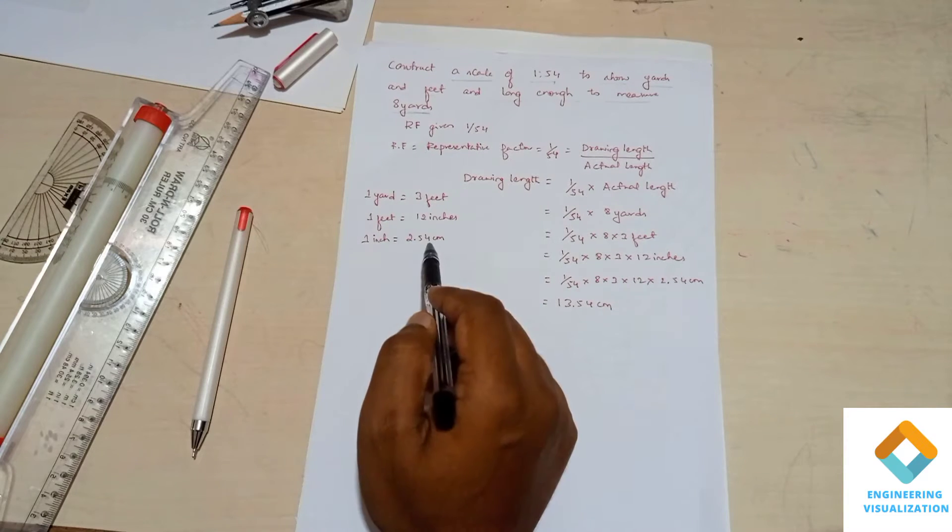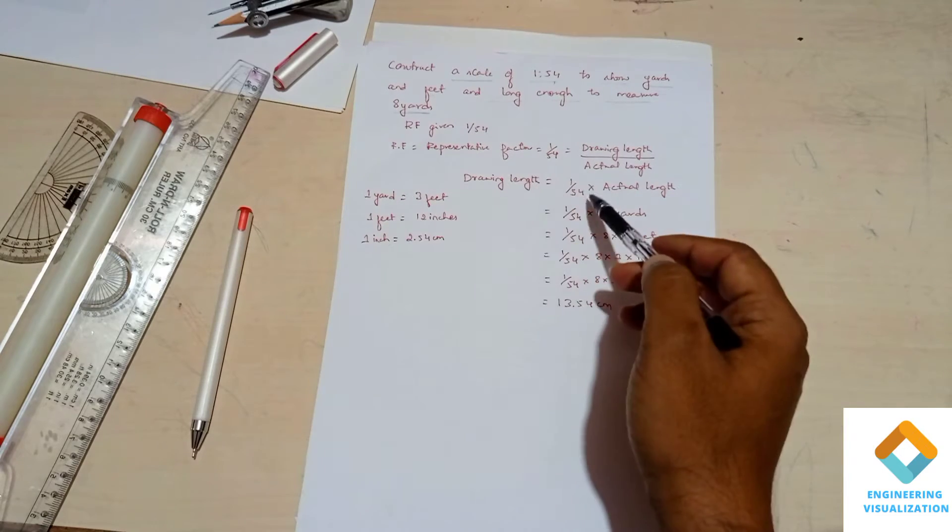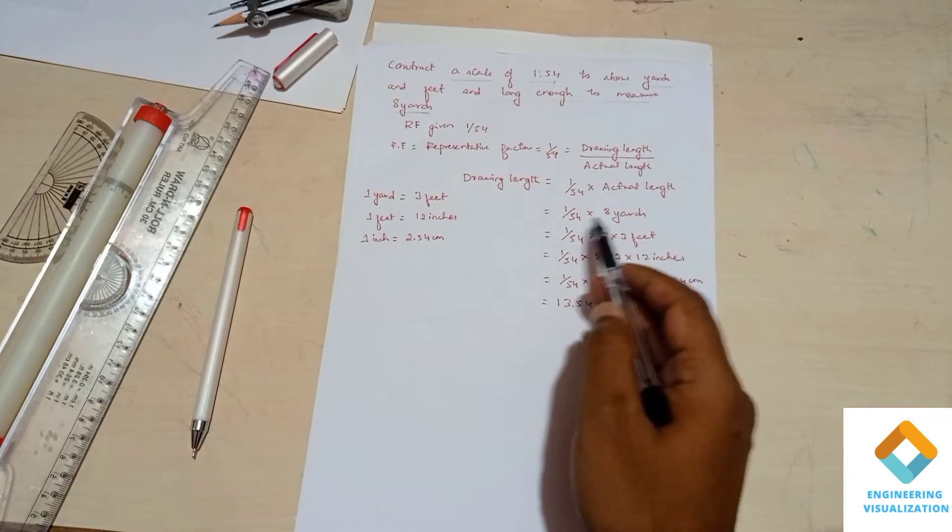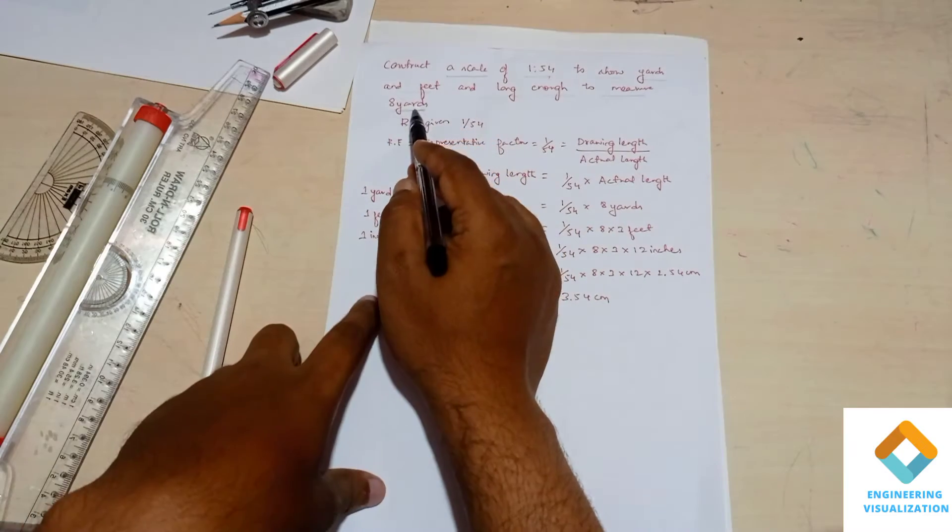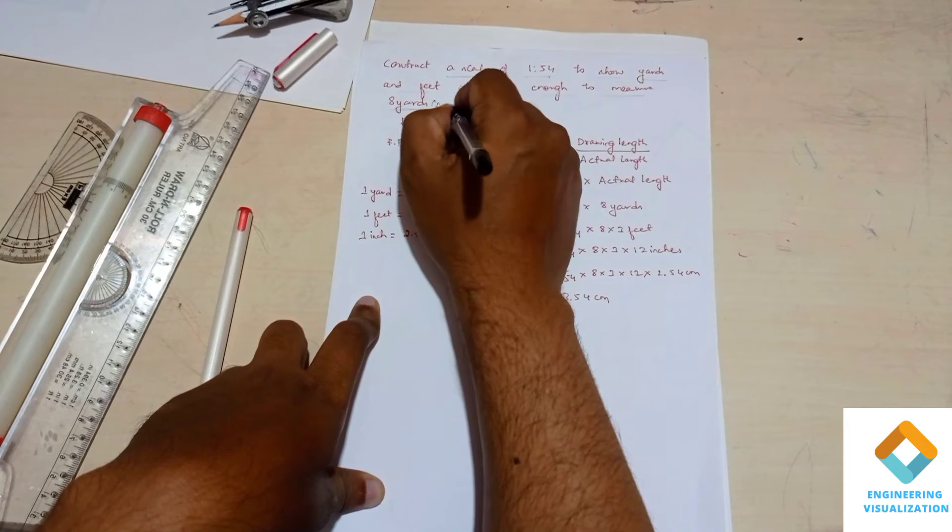You can see that 1 yard is equal to 3 feet, 1 foot is equal to 12 inches, and 1 inch is equal to 2.54 centimeters. So you can see here I have done the calculation to find out the actual length.